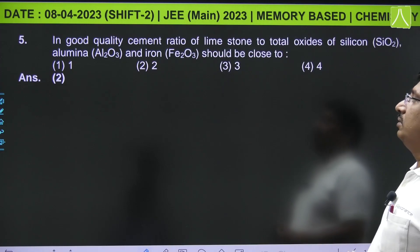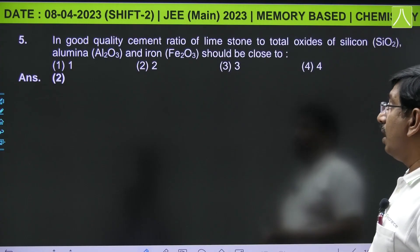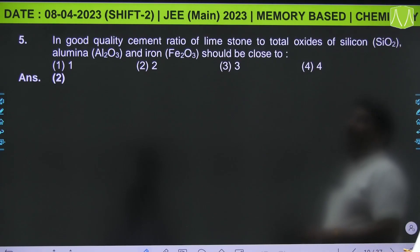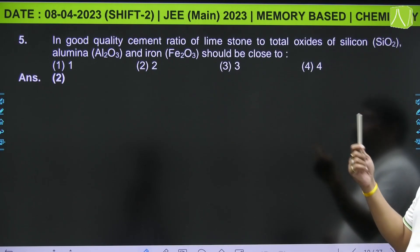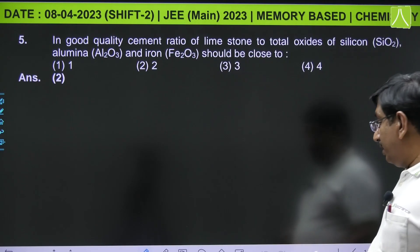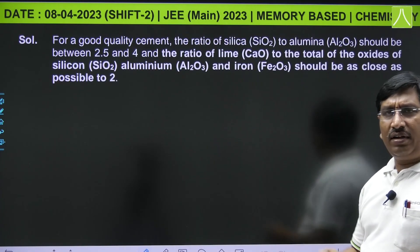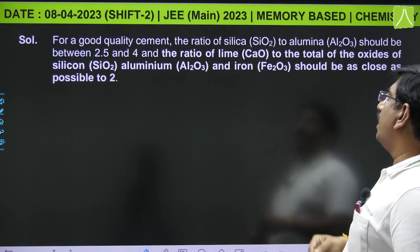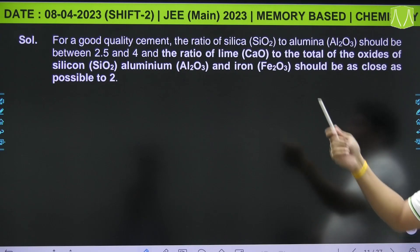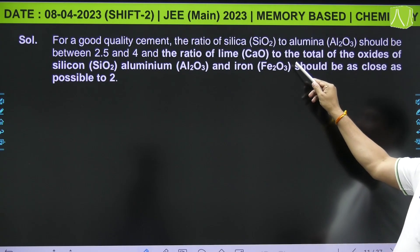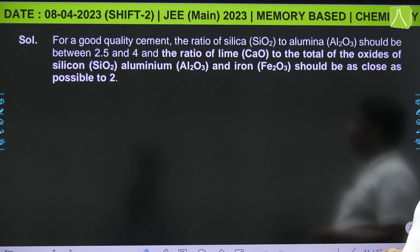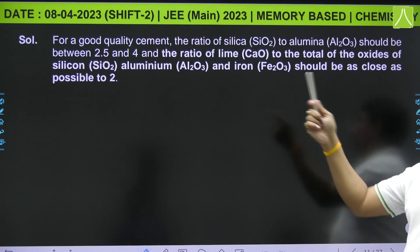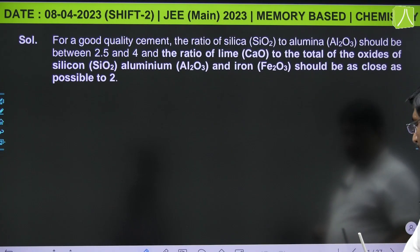This is from s-block, alkaline earth metal cement related. In good quality cement, ratio of limestone to total oxides of silicon, alumina, and iron should be close to what? It's directly given in NCERT that for good quality cement, the ratio of silica to alumina should be between 2.5 and 4, and the ratio of lime to total of the oxides of silicon, aluminum oxide, and iron oxides should be close as possible to 2. So answer should be 2.